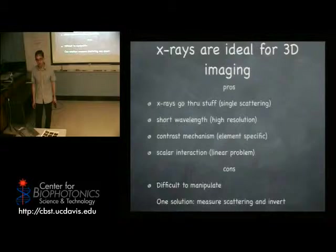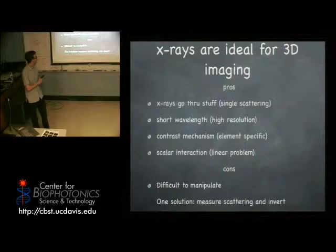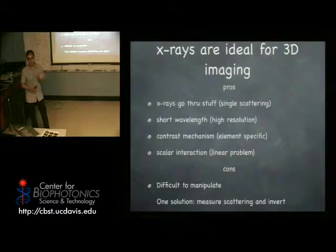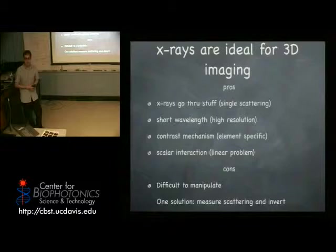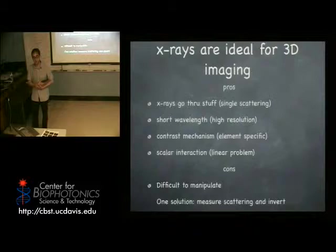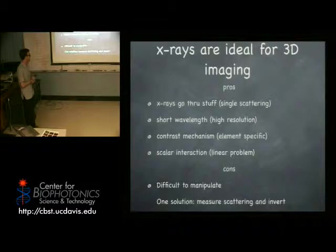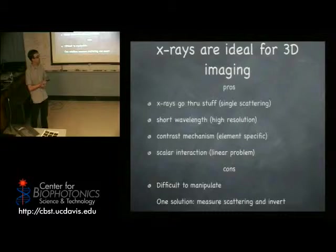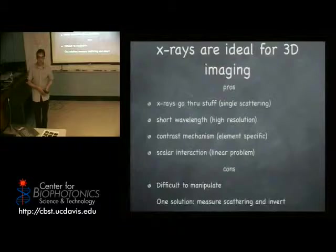The scalar interaction of X-rays is an advantage because it makes the calculation easier. But in special cases with some resonance, you can get non-scalar interaction due to polarization effects like magnetic contrast — you have to go into a special experimental configuration to be able to see this. In imaging, we don't really want it, because it makes everything more complicated. So one of the solutions we are working on, instead of fabricating a microscope with a lens, is to just illuminate the sample with X-rays, measure the scattered X-rays with a two-dimensional detector, and calculate or try to invert the diffraction pattern based on the measurement.